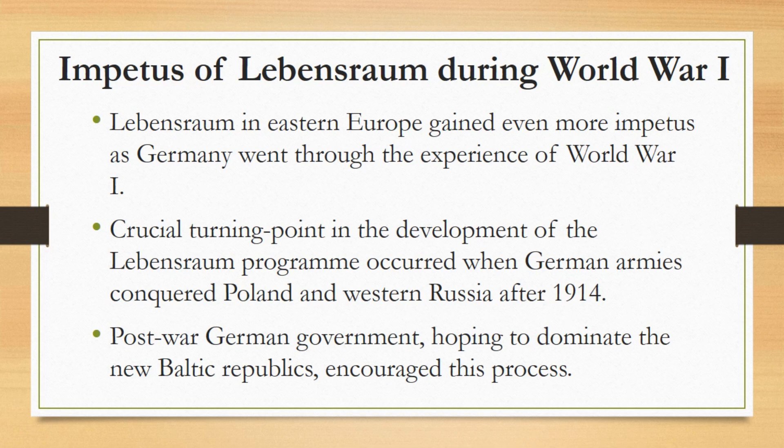Even after the end of the war, German irregular troops — the so-called Free Corps — continued to operate in the Baltic states in a guerrilla war against the Bolsheviks, fought with exceptional brutality on both sides. The post-war German government, hoping to dominate the new Baltic republics, encouraged this process and promised land to the troops. Eventually, however, at the end of 1919, the Allies forced their disbandment and the Free Corps returned to Germany, invaded and frustrated. Some of their members found a home in Hitler's Nazi Party.